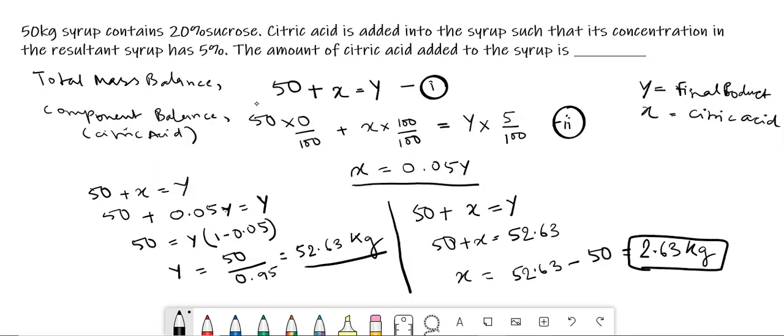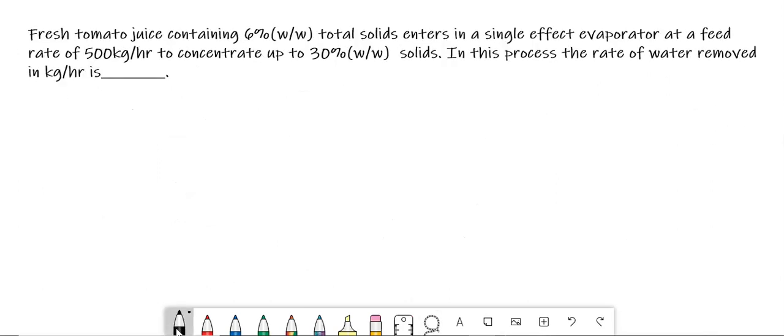So, let us move on to the next question. So, this is the next question. The question says that fresh tomato juice containing 6 percent weight by weight total solid enters in a single effect evaporator at a feed rate of 500 kg per hour to concentrate up to 30 percent weight by weight solid. In this process, the weight of water removed in kg per hour is. So, let us first draw the line diagram.